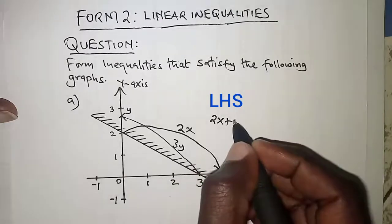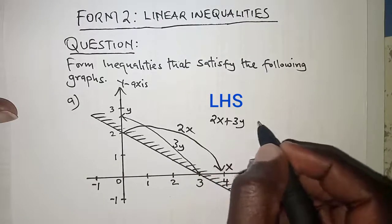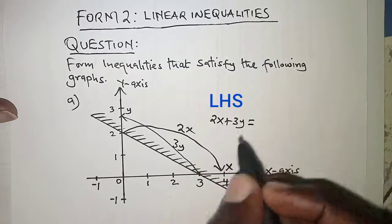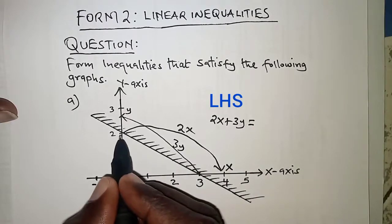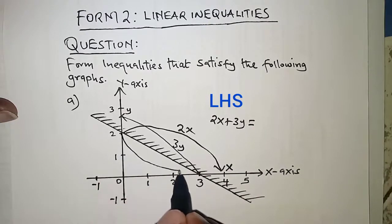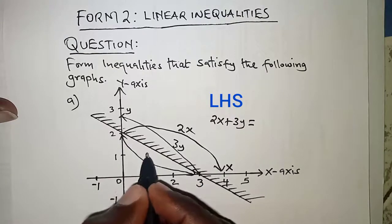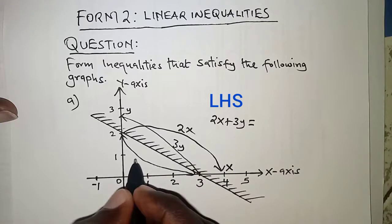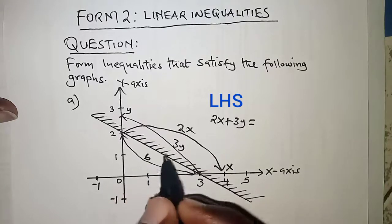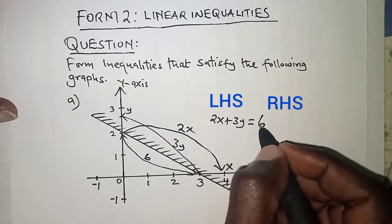On the right hand side we will have the value of the x-intercept multiplied by the value of the y-intercept. So that should give us 2 times 3 and that is 6, so equate it to positive 6. Once you've gotten that, remember there's a side of the line that has been shaded.